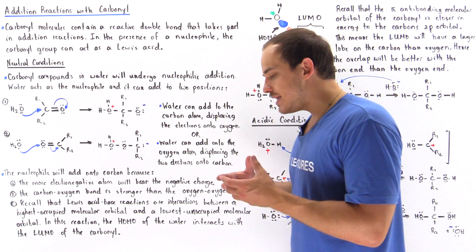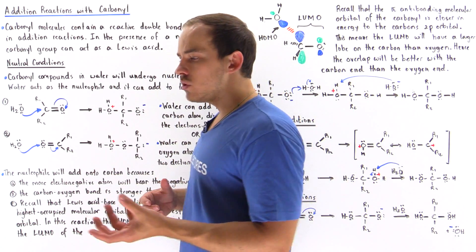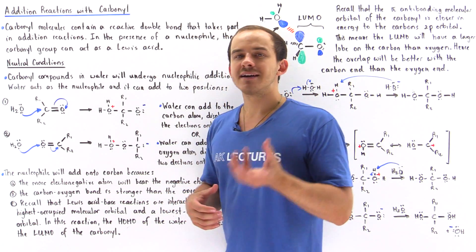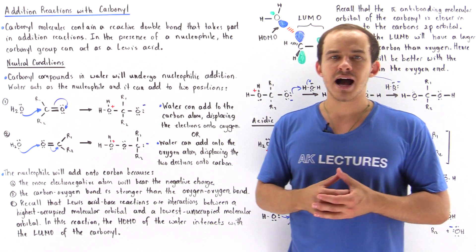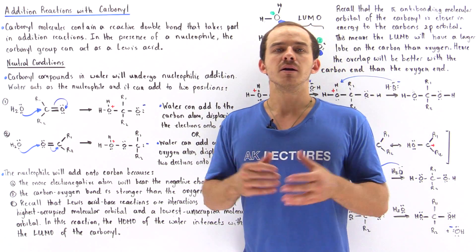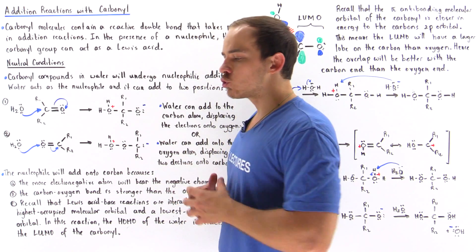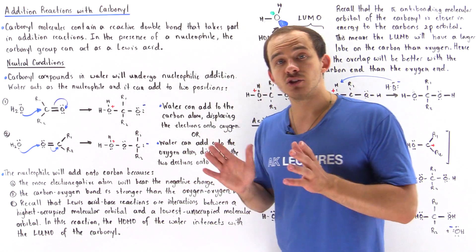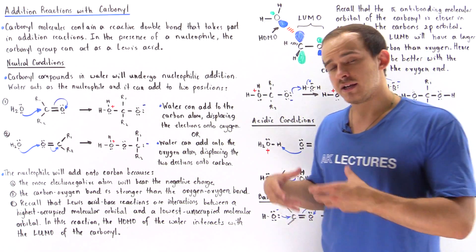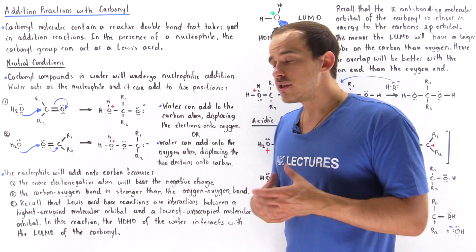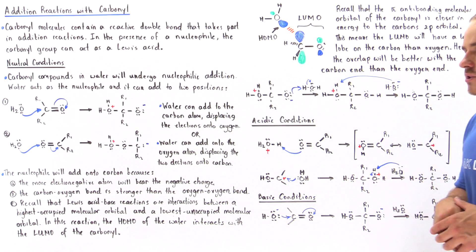In these reactions, the nucleophile acts as our Lewis base — it contains the highest occupied molecular orbital. Our carbonyl group acts as the Lewis acid, and it contains the lowest unoccupied molecular orbital.